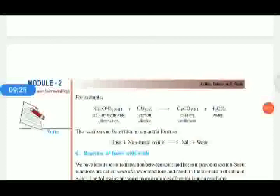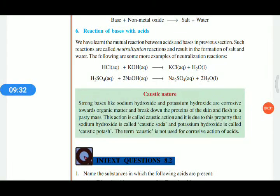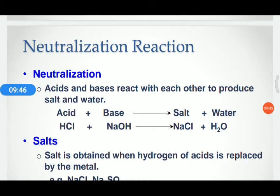Now we discuss the reaction of acid with base. When acid reacts with base it produces salt and water — this process is known as neutralization. Neutralization means acid and base react with each other to produce salt and water: acid plus base gives salt plus water. HCl + NaOH gives NaCl + H₂O.